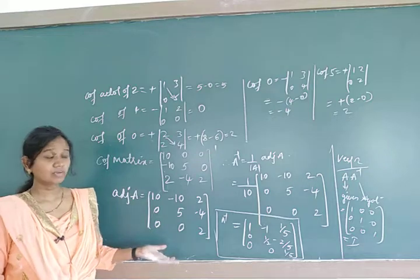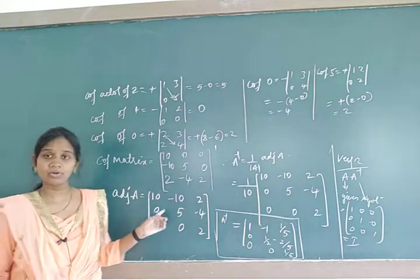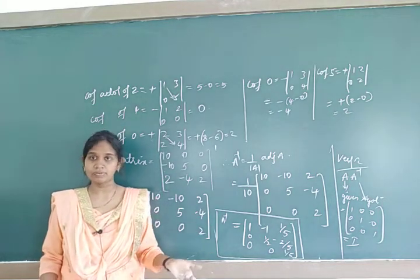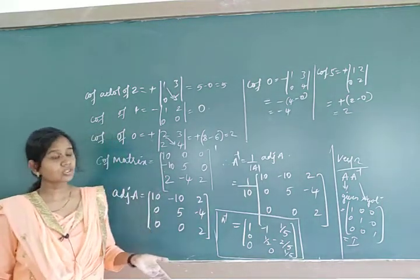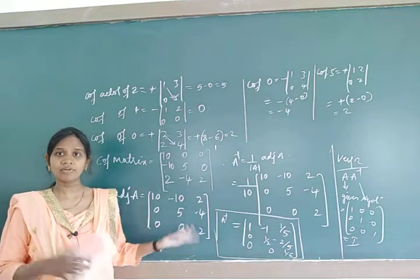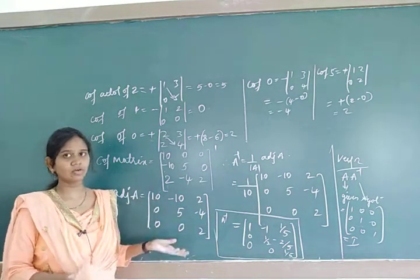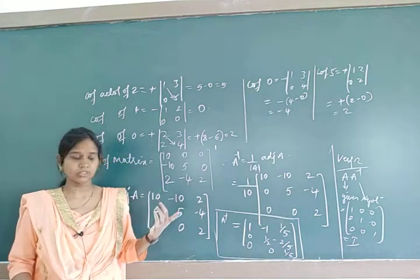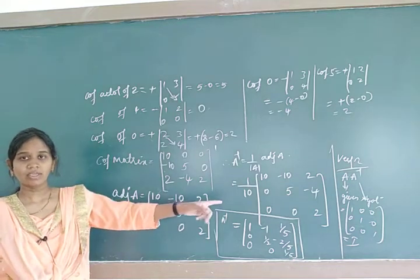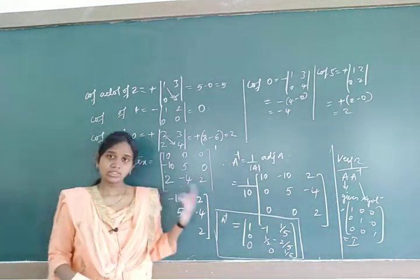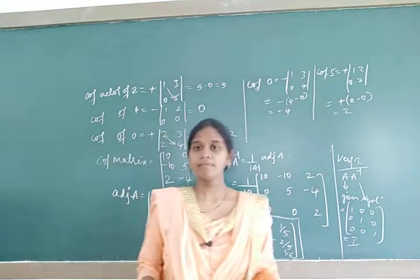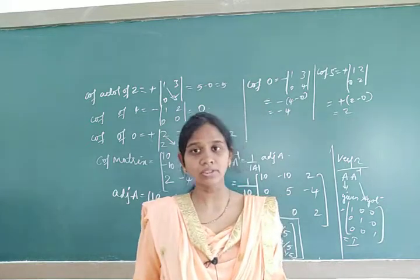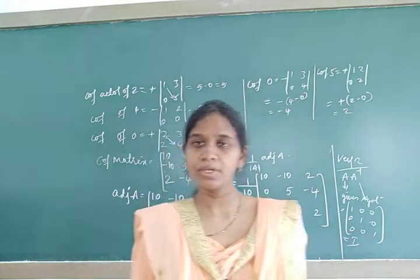In the next class we will continue with more problems on A inverse. In today's session we worked with a 3×3 matrix because we are already familiar with 2×2 from elementary row or column transformation. We will also find the 2×2 inverse using the formula. The verification step is A × A⁻¹ = I. We will do 2 to 3 more problems on A inverse in the next session so the concept becomes clear. Thank you.